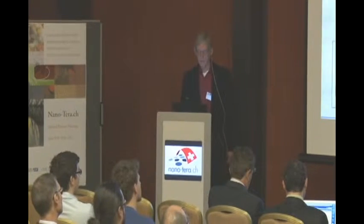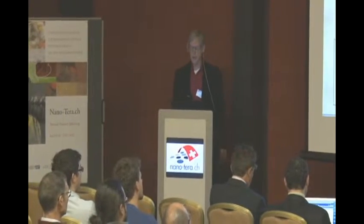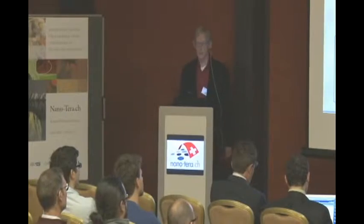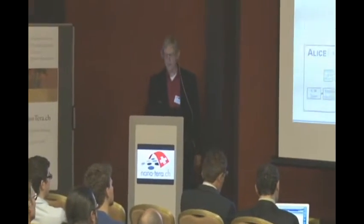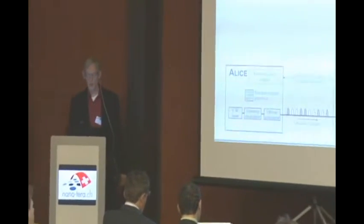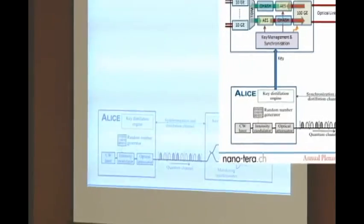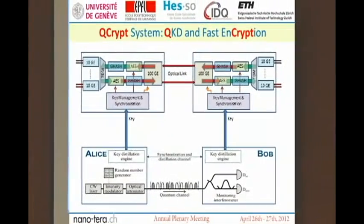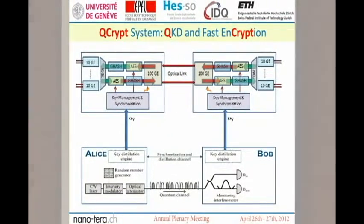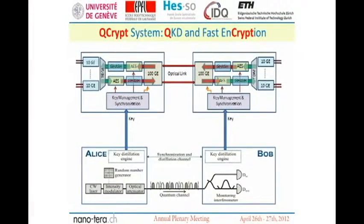I show you a block diagram of our system which consists of the Q part, or the QKD part, which exchanges the secret keys, and of the fast encryption part which I call encryption.